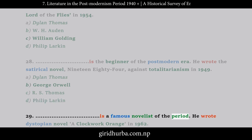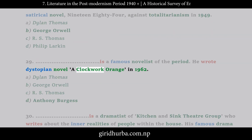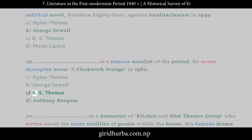Question 29: Who is a famous novelist of the period who wrote the dystopian novel A Clockwork Orange in 1962? A. Dylan Thomas. B. George Orwell. C. R.S. Thomas. D. Anthony Burgess.